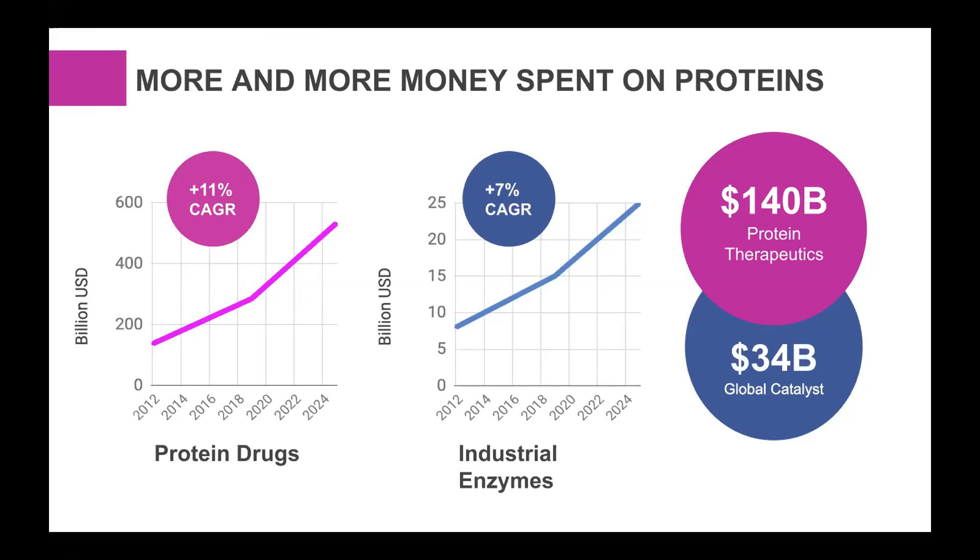But proteins can also be used in the industry, in the chemical industry as enzymes. So proteins are essentially little machines that can perform chemical reactions in the form of enzymes. Such chemical reactions, for example, can make agriculture more effective, create new biofuels, transform plastics into renewable sources. And so there's also a huge interest from the chemical industry to create better enzymes and move away from toxic metal catalysts.